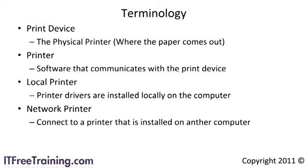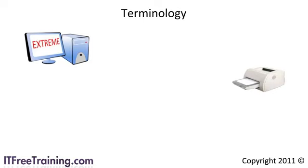A local printer will have the software installed on the computer, while a network printer will have the software installed on another computer. Note that the terms local and network printer are in relation to where the software is installed that runs the print device. The physical printer could be connected by a parallel cable, USB, or even connected to the network. If the computer has printer drivers installed locally, it could print directly to the print device — this would be an example of a local printer, regardless of how the data is sent to the printer.